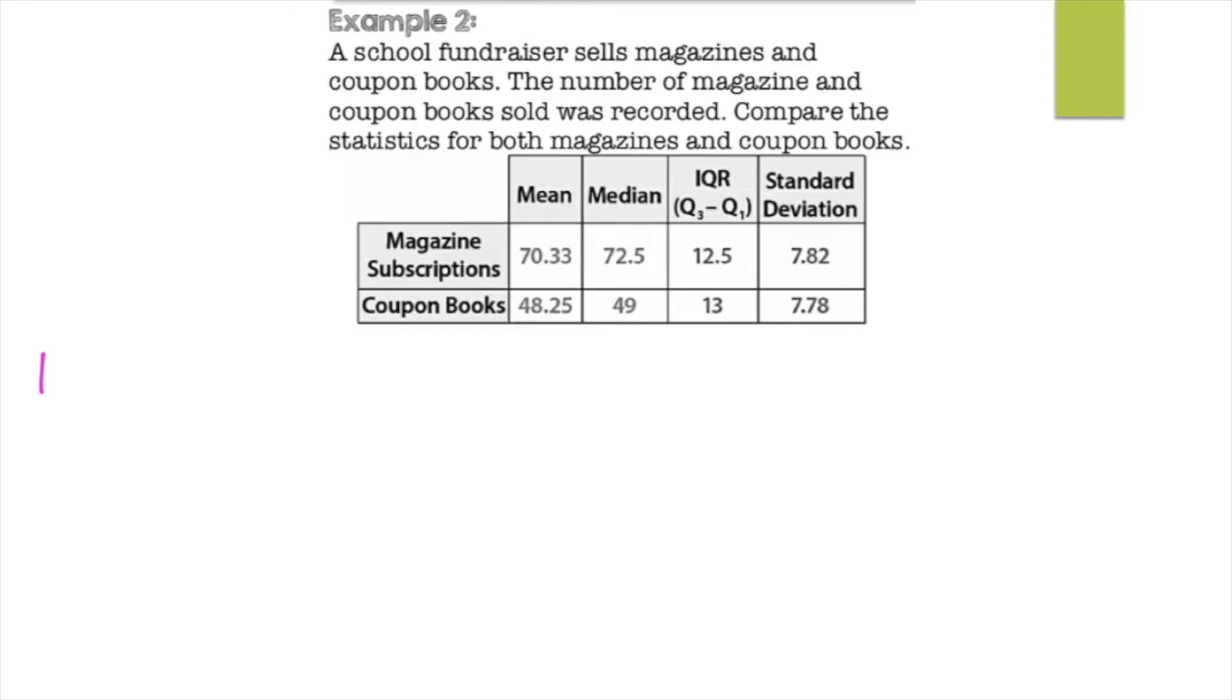Alright. So for this one, it says, a school fundraiser is selling magazines and coupon books. The number of magazines and coupon books sold were recorded. Compare the statistics for both magazines and coupon books. So looking at this data, we have a mean 70.33, which is a lot higher than coupon books. The median is also a lot higher at 72.5 than 49.